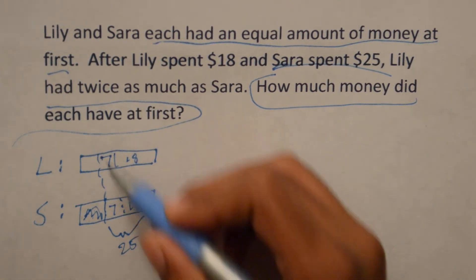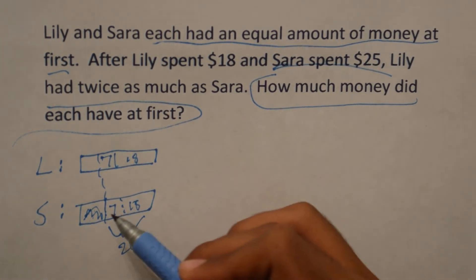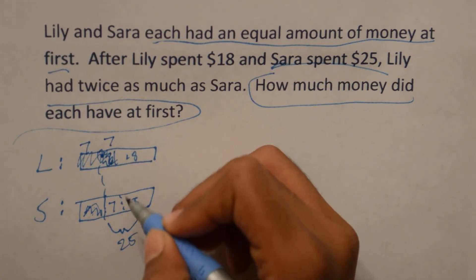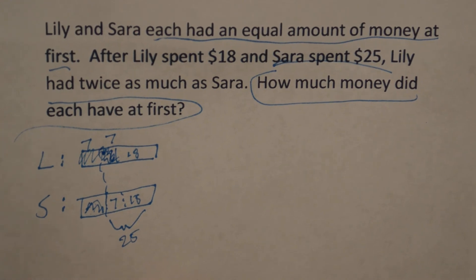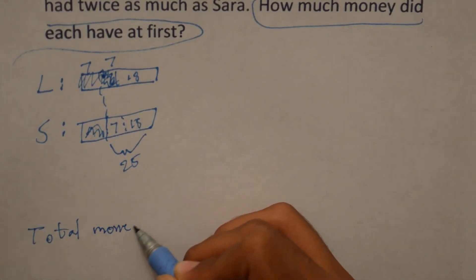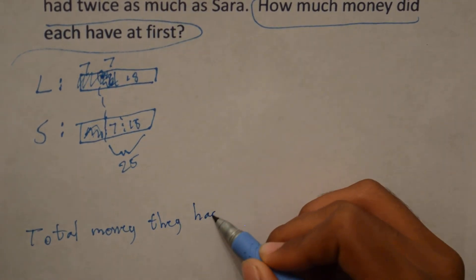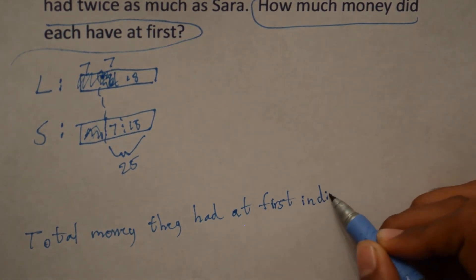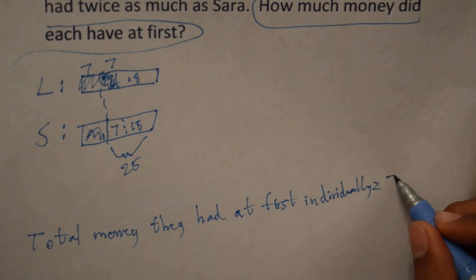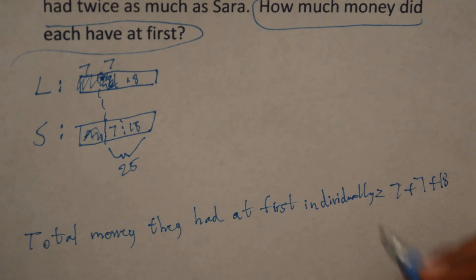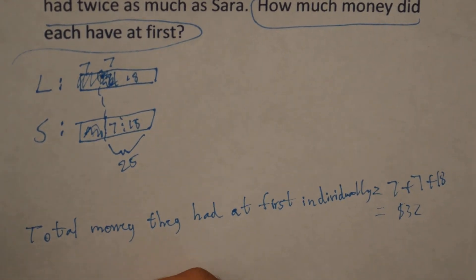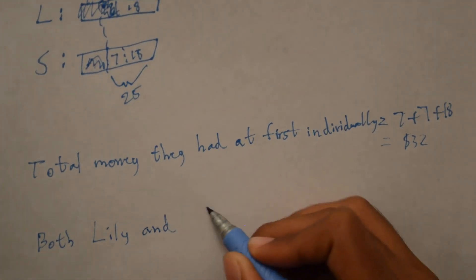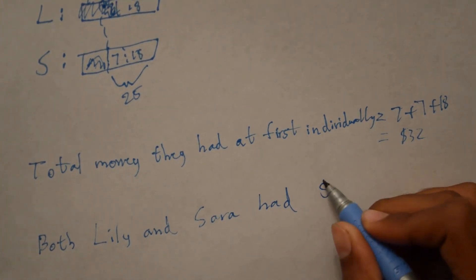Since we know that this difference is 7 — because they each had an equal amount of money at first — and that this money is half as much as this money, we know that each of these small units is 7. So we know that the total money they each had at first is equal to 7 plus 7 plus 18, which is equal to $32. So both Lily and Sarah had $32 at first.